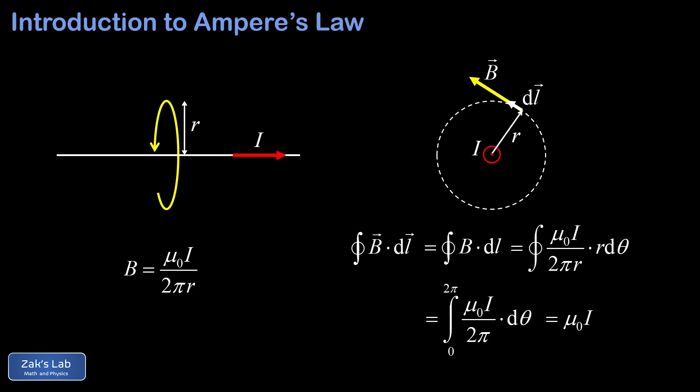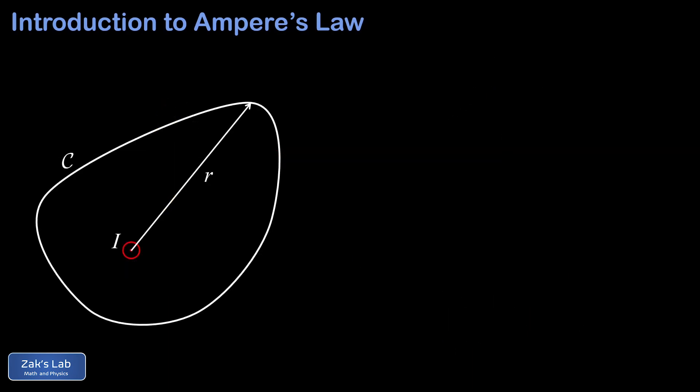If we integrated in the opposite direction — clockwise in this case — we would draw dL pointing in the opposite direction, and the dot product would produce a minus sign in the result. Currents penetrating this loop in opposite directions give opposite signs for the result of the path integral. This is a really important moment because, analogous to the derivation of Gauss's law for electric fields, we just found out that our path integral only depends on how much current is contained within the closed curve — how much current is passing through the surface defined by the curve.